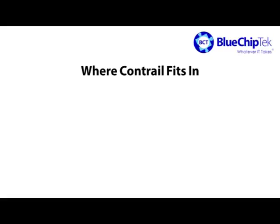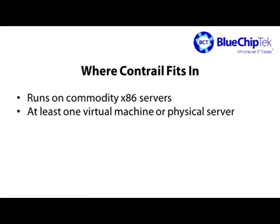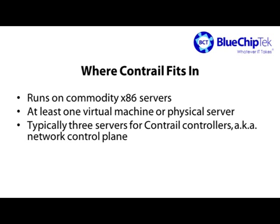Being software, Contrail needs to run somewhere. A lot of network software runs on specialized hardware such as routers, switches, and firewalls. Contrail, by contrast, is x86 software that runs on commodity server hardware. If you just want to kick the tires, you can run Contrail inside a single virtual machine or on one physical server. Most typically, people run Contrail controller software on a set of three physical servers, because you need at least three separate servers to make Contrail highly available. In Juniper parlance, those servers are the control plane for Contrail.